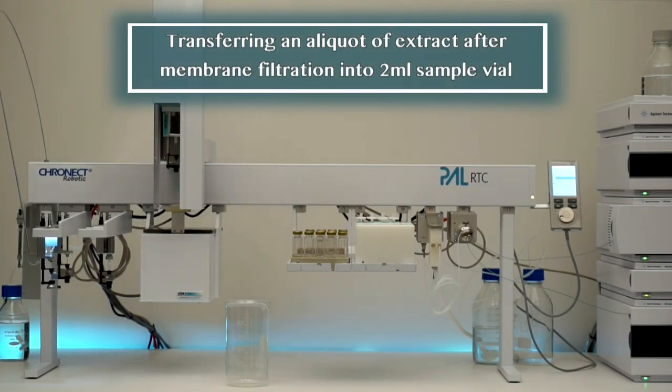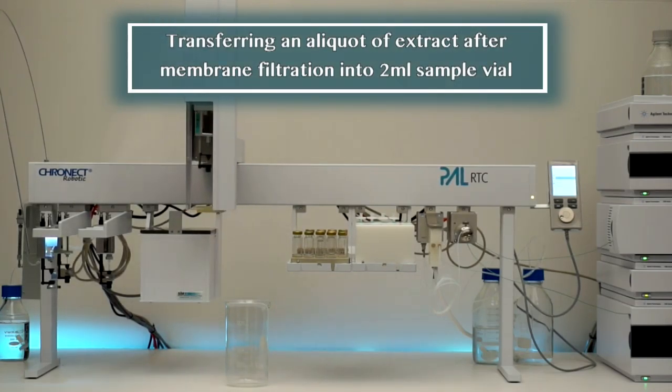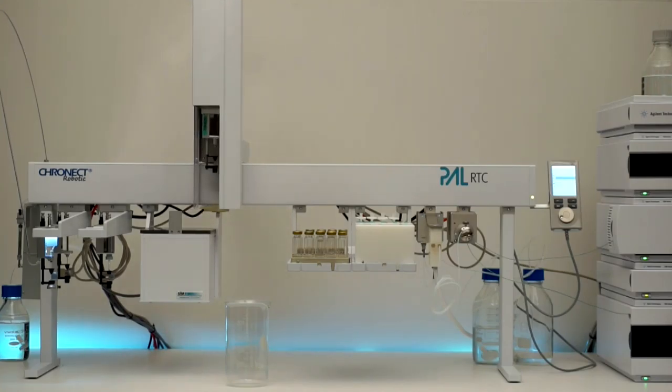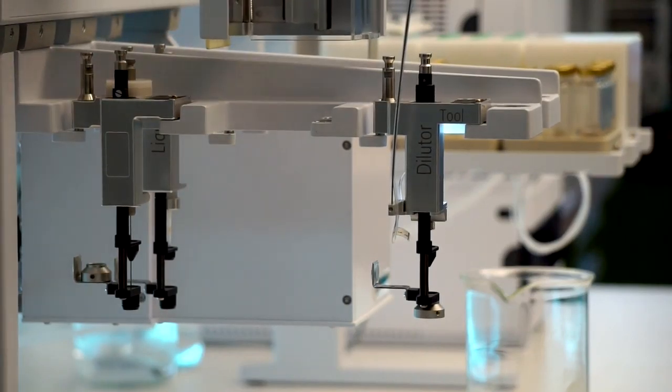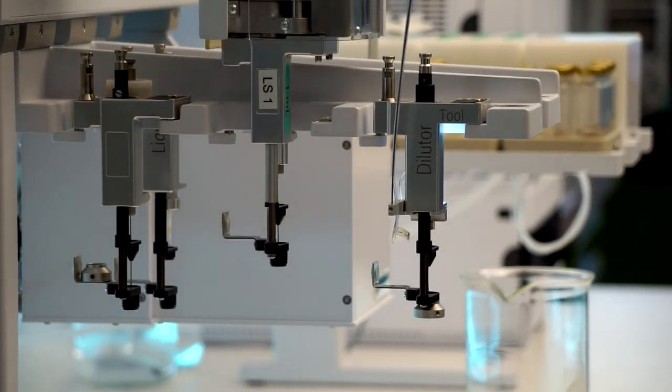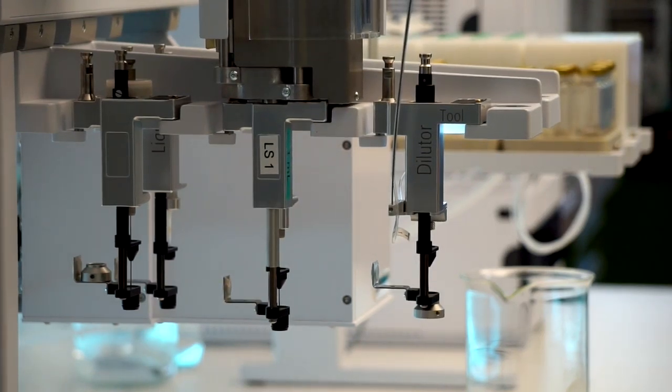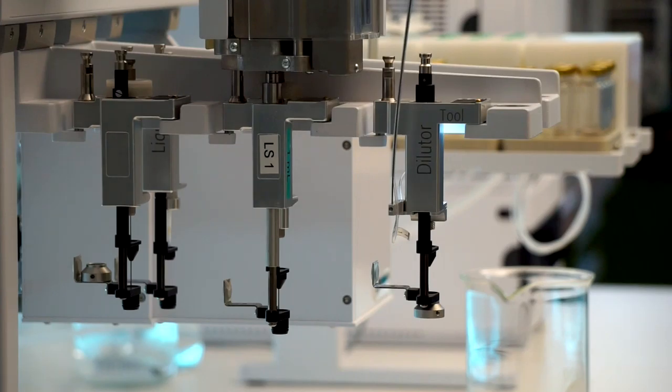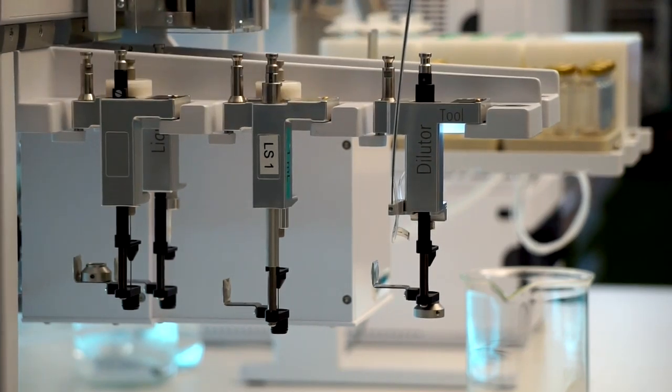Transferring an aliquot of extract after membrane filtration into 2 mL sample vial. The vial with the extracted sample is under pressure that must be removed before filtration. For this purpose, the robotic arm changes from the 1 mL syringe tool to the general syringe tool with Lure lock connection and takes out a syringe needle from the material tray.